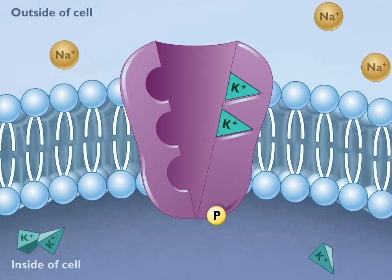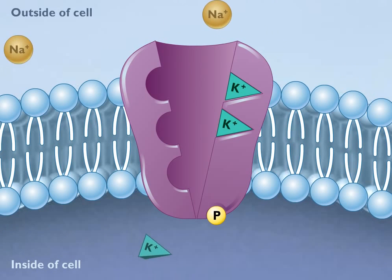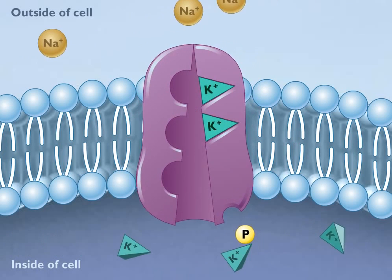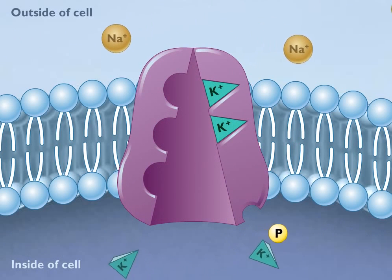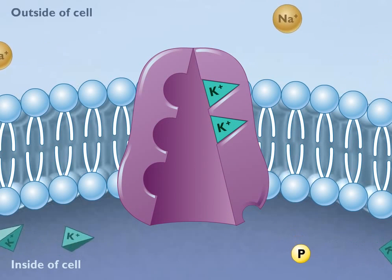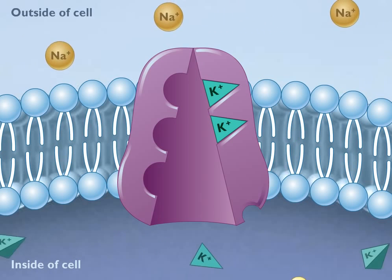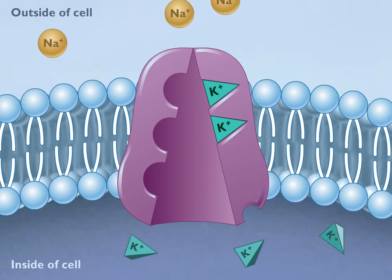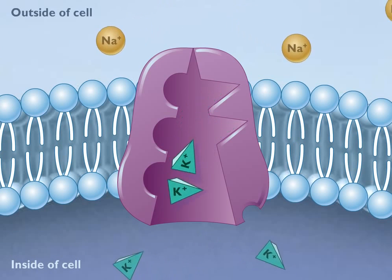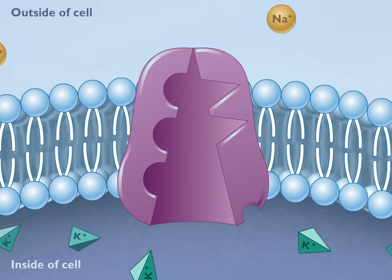This binding again causes a change in the shape of the protein channel, and this conformational change releases the phosphate group on the cytoplasm side. This release allows the channel to revert to its original shape, and as a result, the potassium ions are released inside the cell.